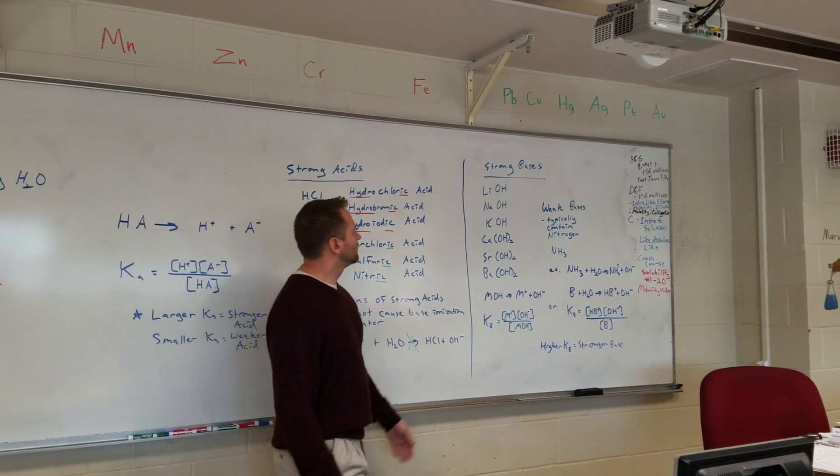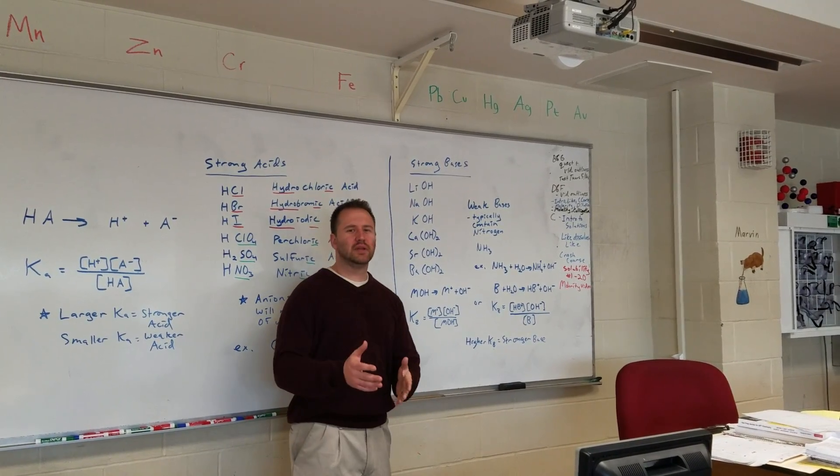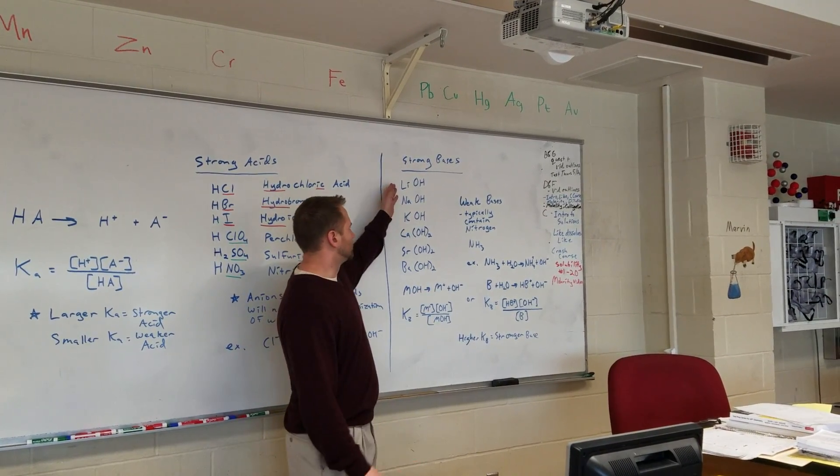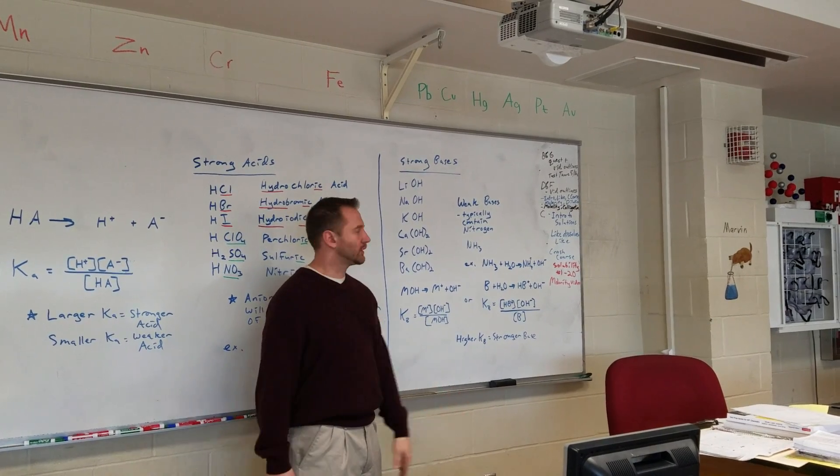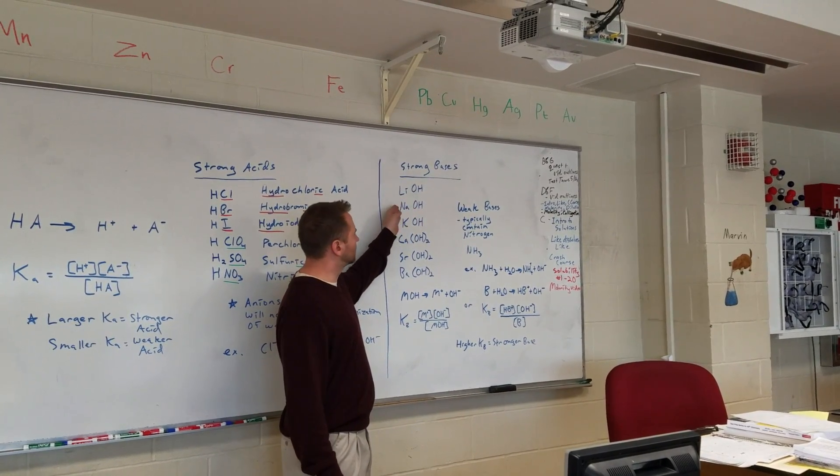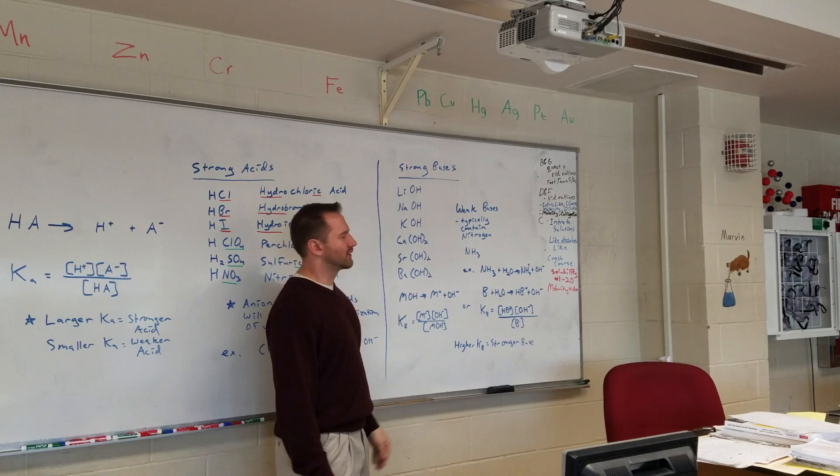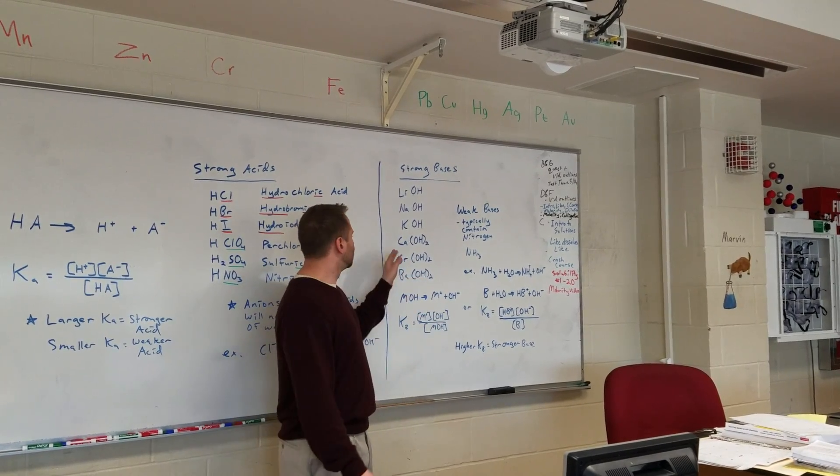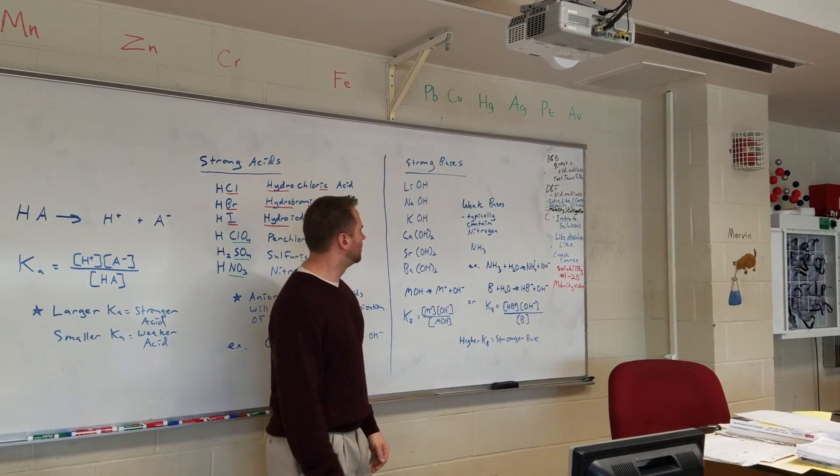Strong bases, we really have two categories, and naming them is very simple. You just name them like you would regular ionic compounds. So lithium hydroxide, sodium hydroxide, potassium hydroxide, calcium hydroxide, strontium hydroxide, and barium hydroxide.